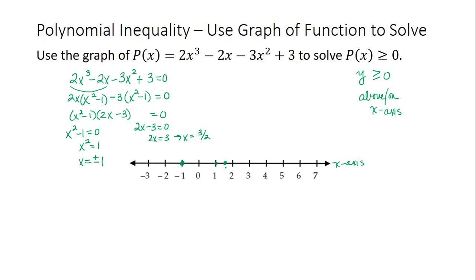Specifically, we also know the end behavior of this function. Notice that the leading term is 2x³. That tells us the degree of the polynomial is 3, which is odd. The leading coefficient is 2, which is positive.